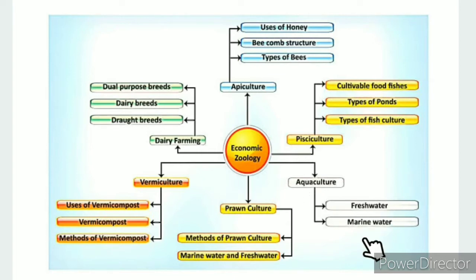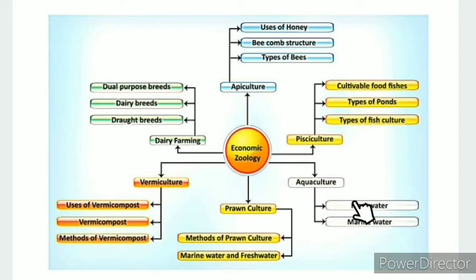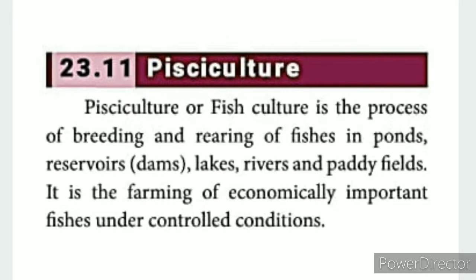From water we obtain fish, crab, and other aquatic organisms. Fish culture is called Pisciculture. Pisciculture or fish culture is the process of breeding and rearing of fishes in ponds, reservoirs, lakes, rivers and paddy fields. It is the farming of economically important fishes under controlled conditions.